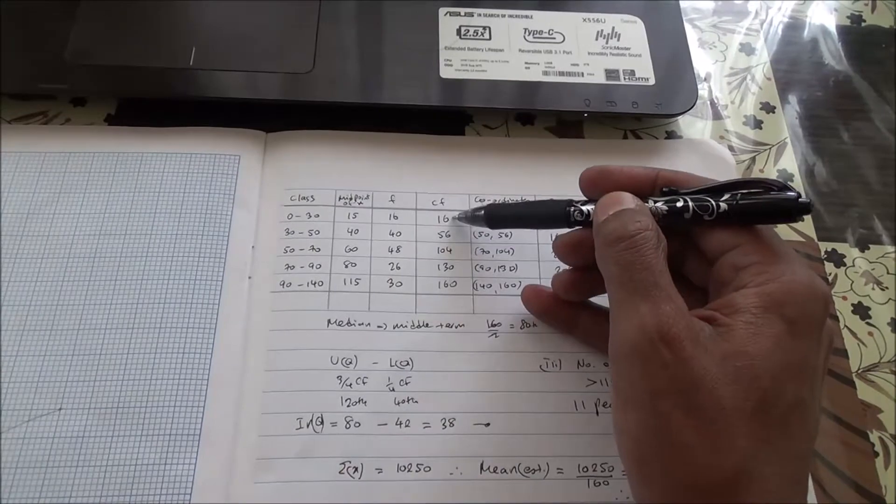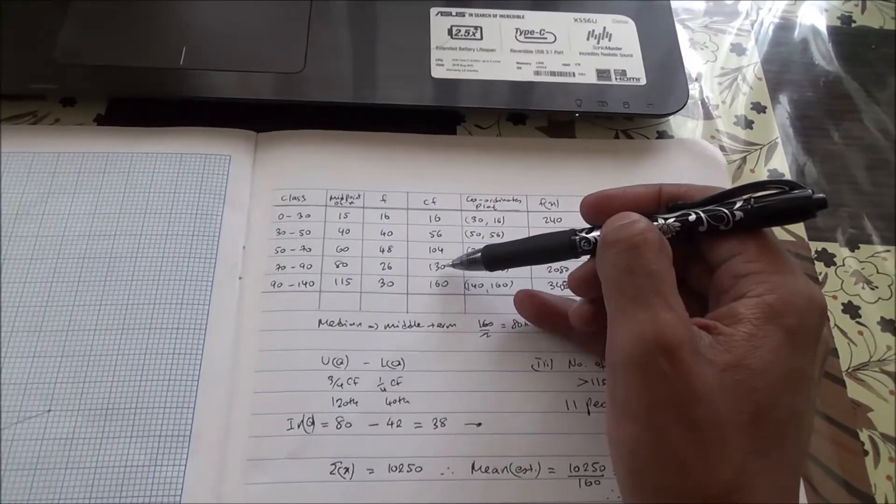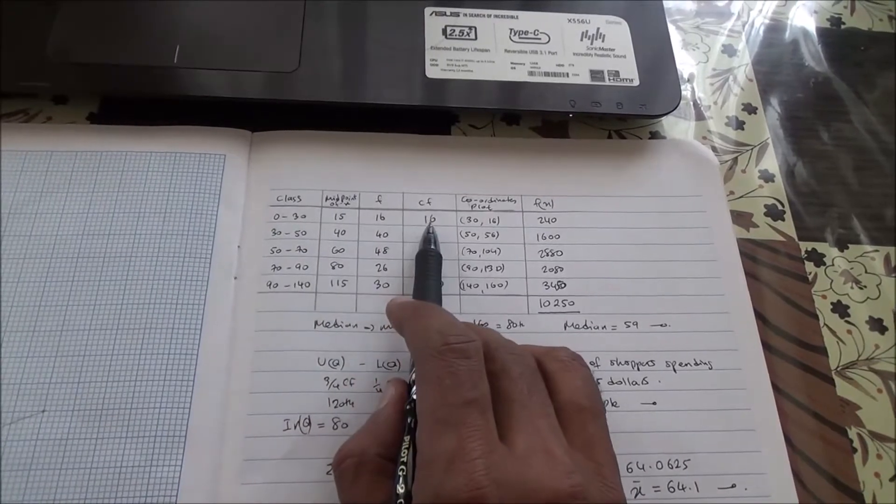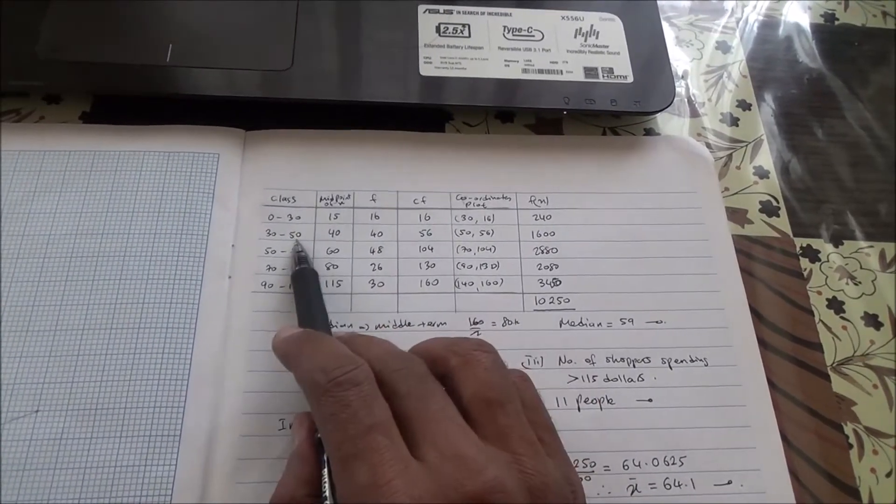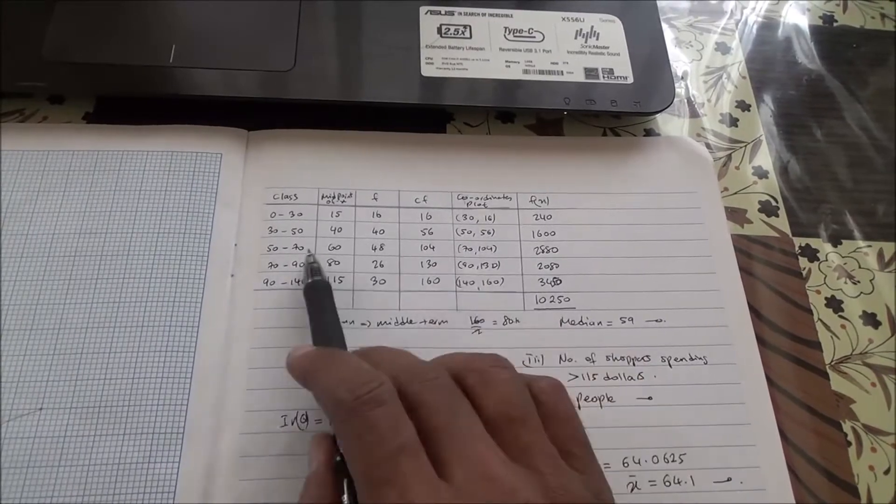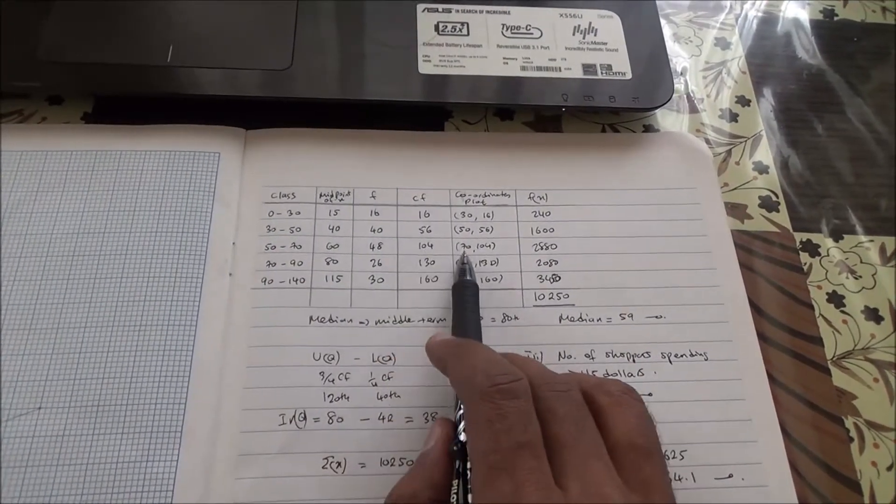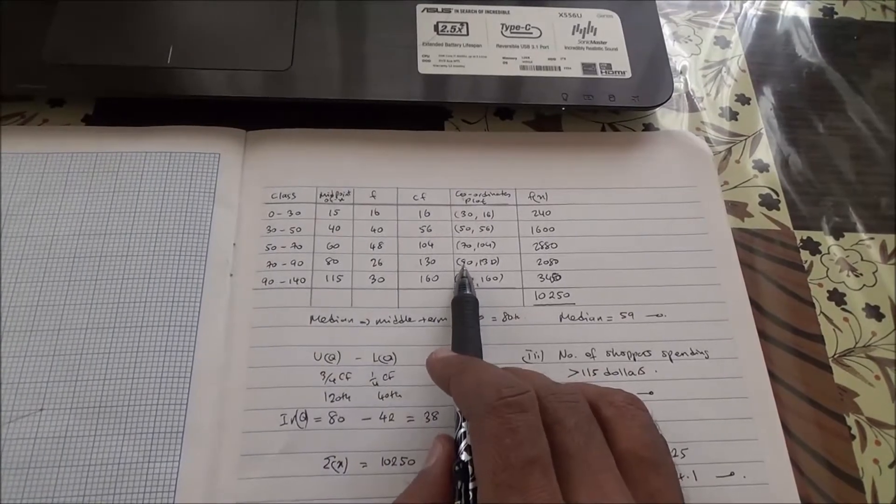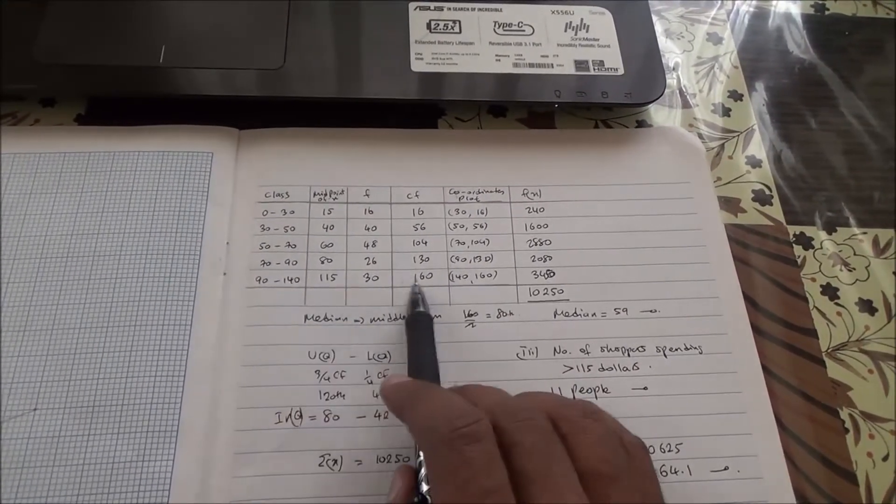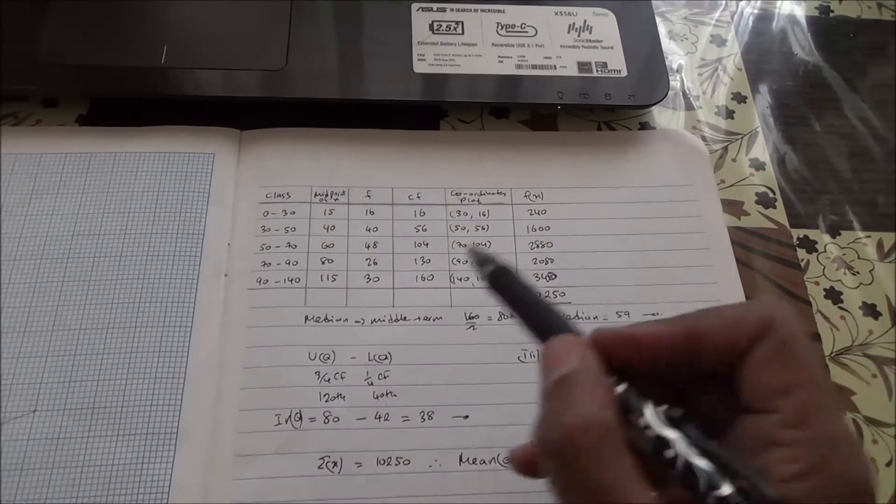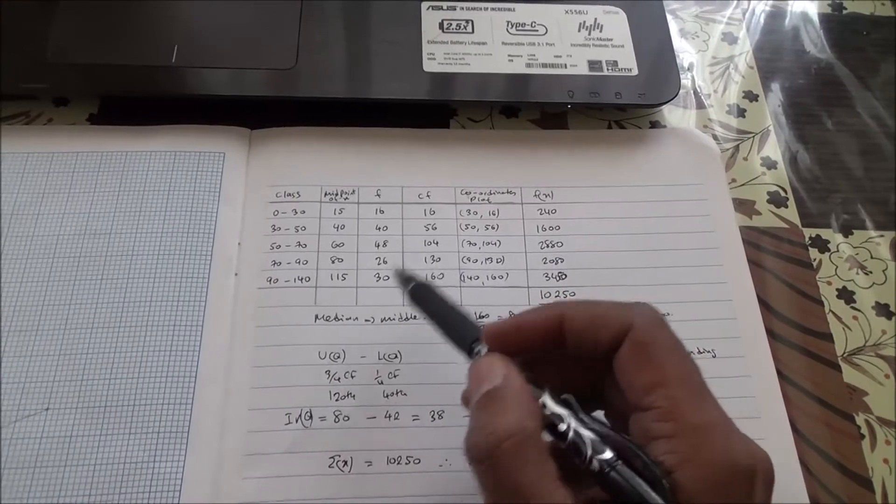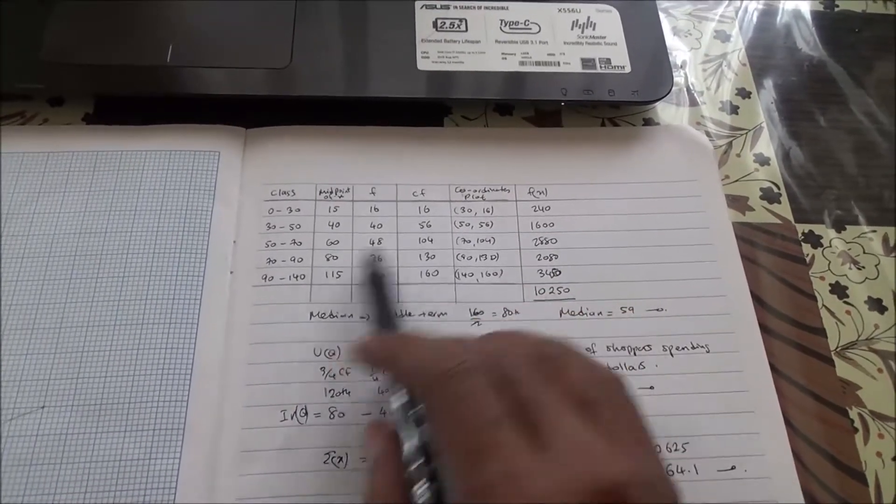We're going to need that in order to be able to plot the points. The points we're going to plot to draw the curve is going to be 30 and then 16, 50 and 56. As you can see, 30, 16, 50, 56, 70, 104. Here we are. 80, 130. Sorry, 90, 130, and here we are. 140, 160. This is it. Now also, after having drawn the curve, before we go any further...